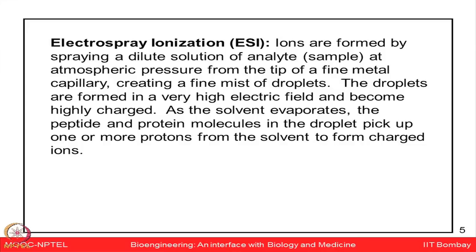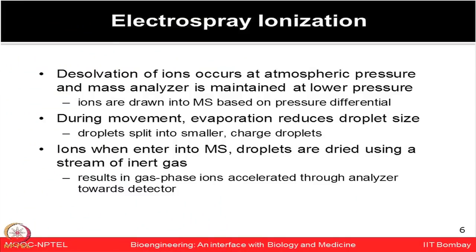Another ionization method is electrospray ionization or ESI. In ESI, ions are formed by spraying a dilute solution of analyte at atmospheric pressure from the tip of a fine metal capillary, creating a fine mist of highly charged droplets formed in a high electric field. Desolvation of ions occurs at atmospheric pressure while the mass analyzer is maintained at lower pressure.